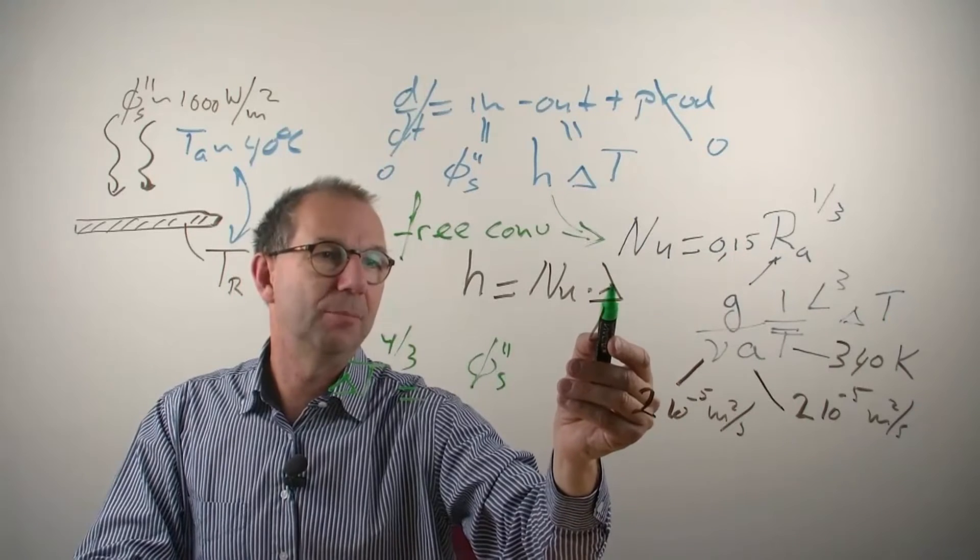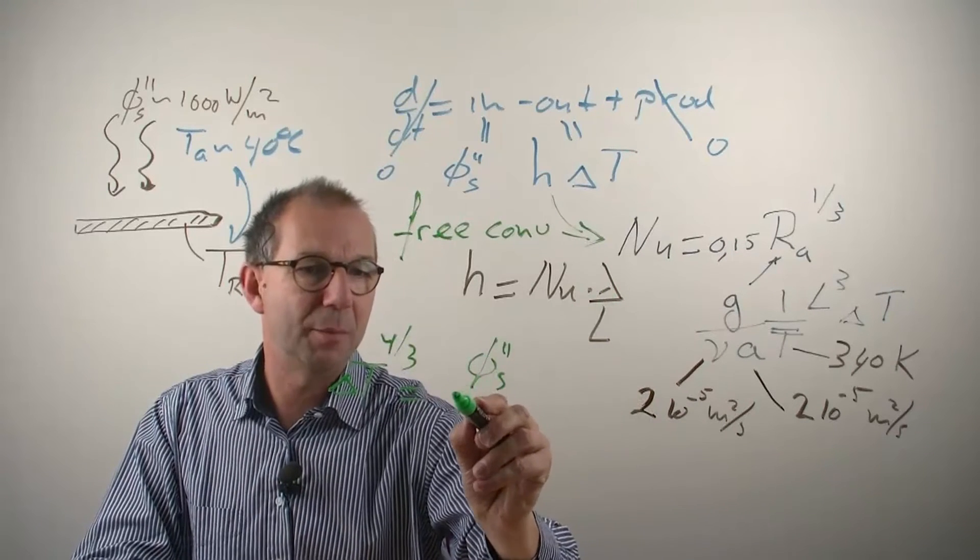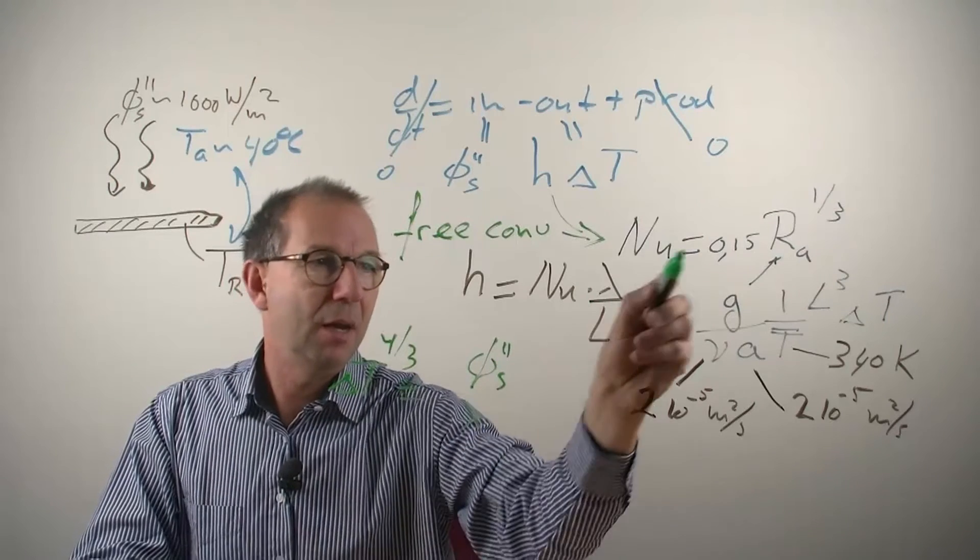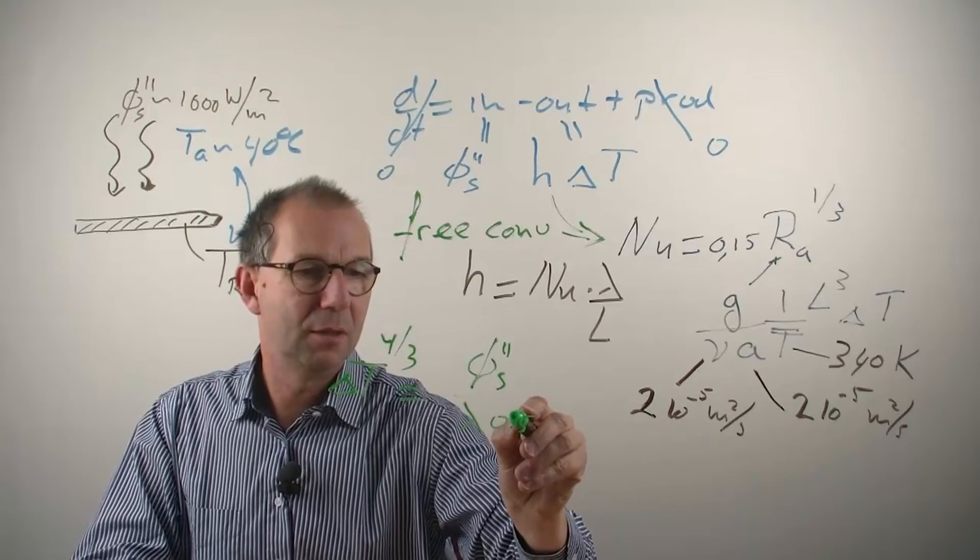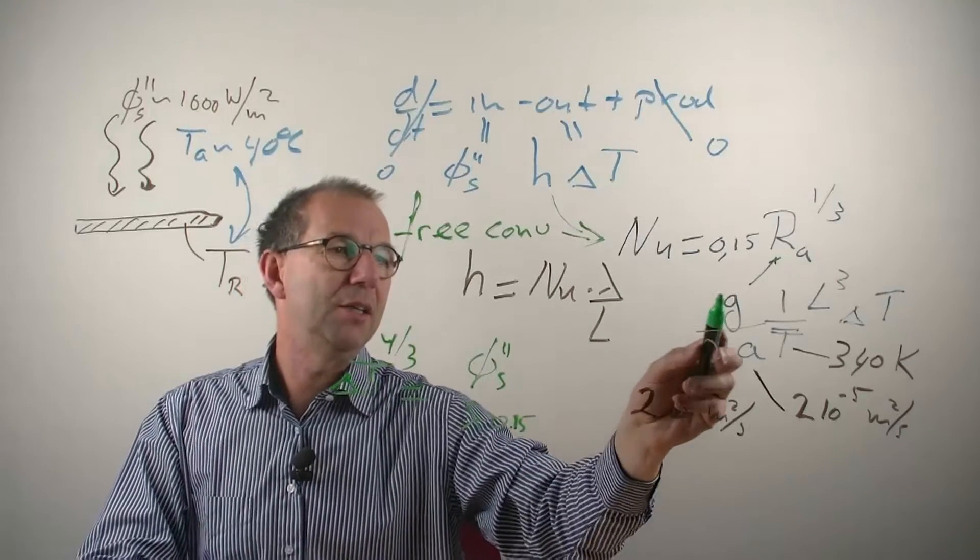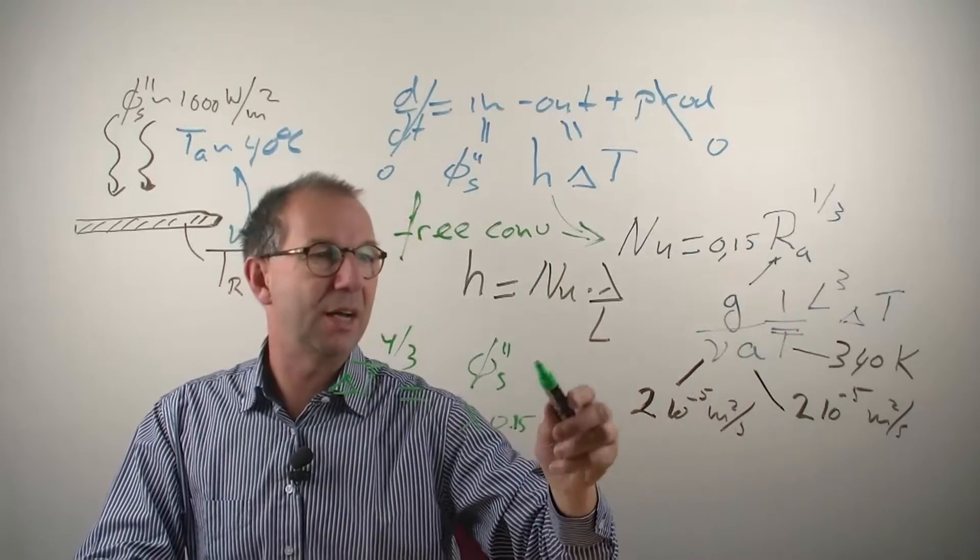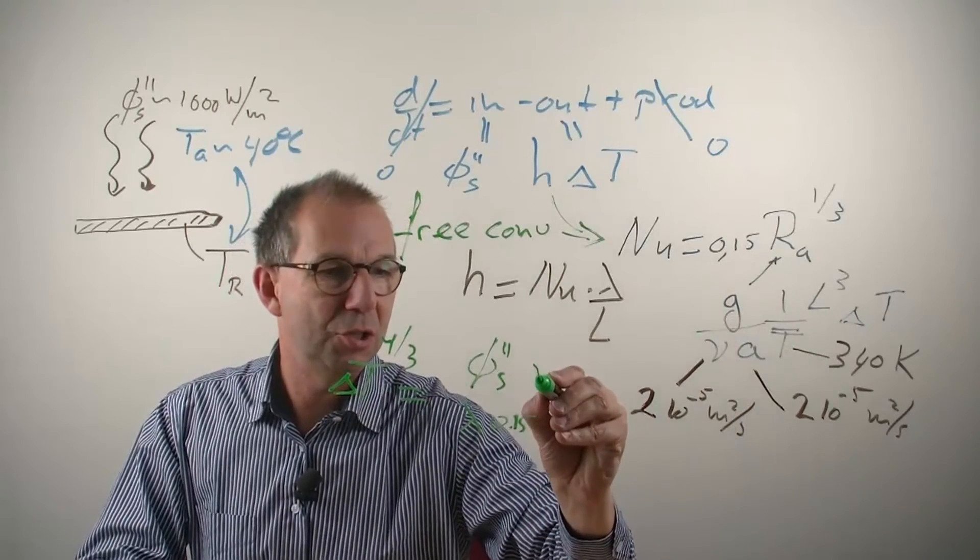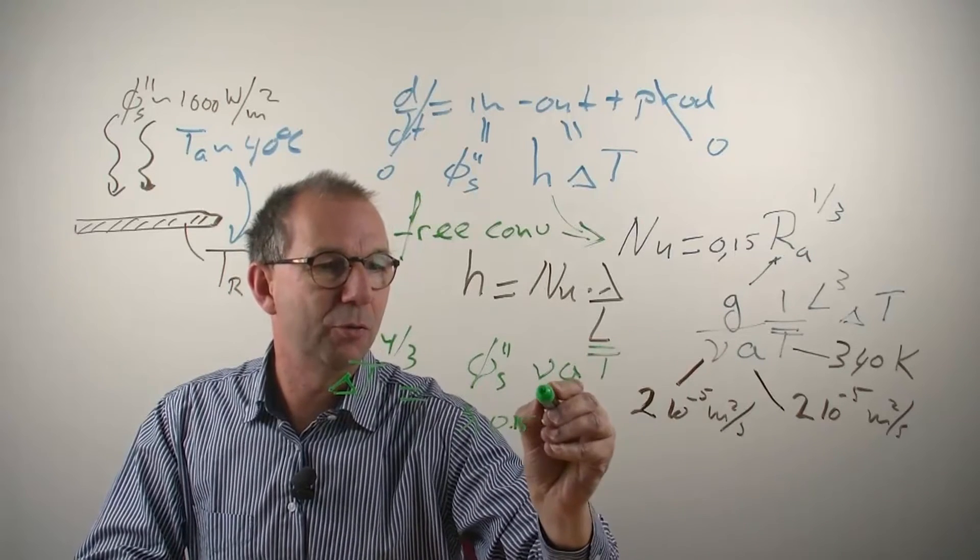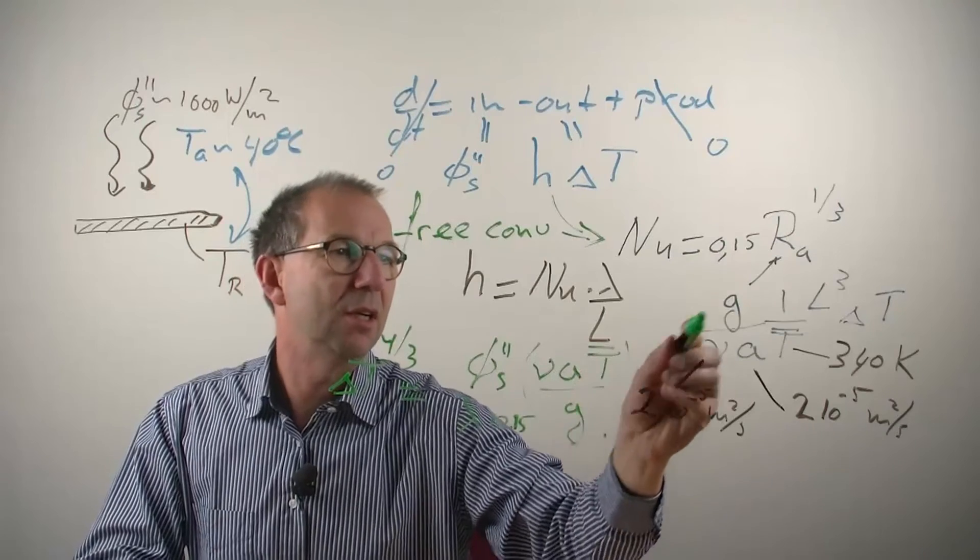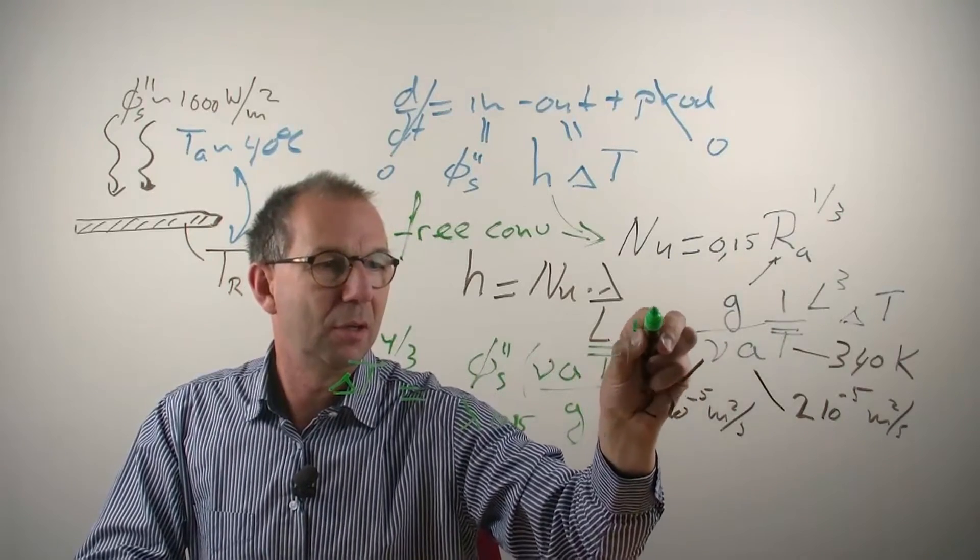If I do that in h there is a lambda, the L scale drops out so I need to divide by lambda. I need to divide by the Nusselt number, that is 0.15. I need to divide by this except for the L and that goes upside down so that is nu A over T average over g, and this is still to the power 1 third.